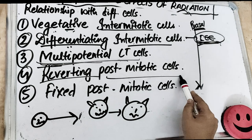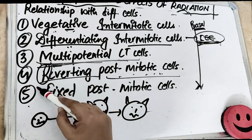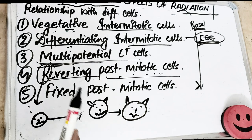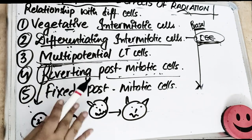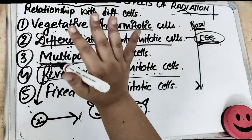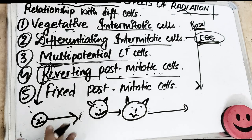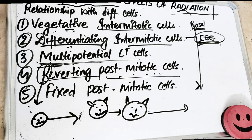The fourth type is the reverting post-mitotic cell. These cells do not divide frequently — they divide very infrequently. From this category onward, radio resistance begins. These are specialized cells that live for a long time and would rather die than divide. Under some conditions they may divide, but it is rare. Examples include acinar cells and ductal cells of the salivary gland.